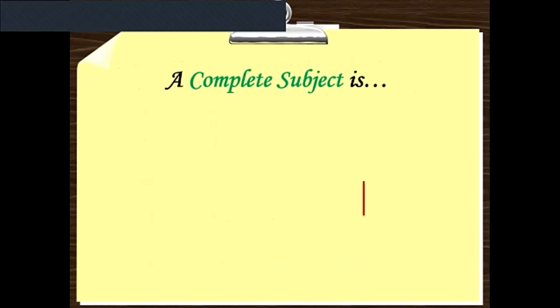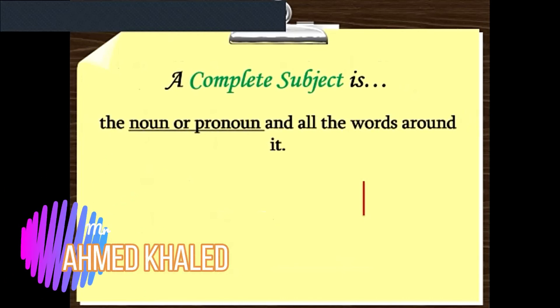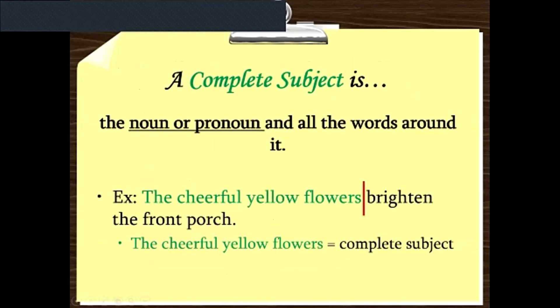As I said before, we have a complete subject. It may be one word or more than one word. Also, we said that the subject is either a noun or a pronoun, and all words around it. Like if you can see here, 'the cheerful yellow flowers.' We have here around three words. All those are the complete subject. Then the predicate or the action: 'brighten the front porch.' Brighten the front porch is the predicate.